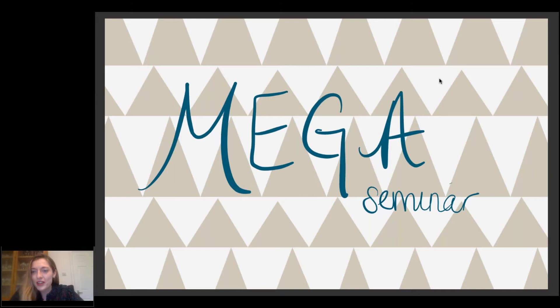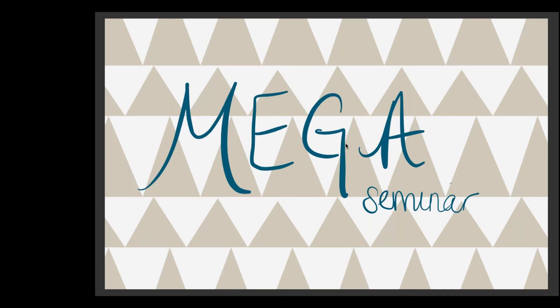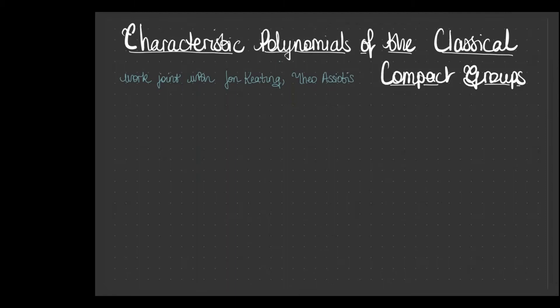Thank you very much. I will say salut now with my face. I might turn off the video to preserve bandwidth. So hi, this is me and now you'll hopefully just hear my voice. As he said, I want to talk today about the characteristic polynomials of the classical compact groups. Everything I'm going to be talking about today is work joint with John Keating and Theo Asiotis, some work we've been conducting over the past two or three years. It's a pleasure to speak to everyone today and Happy New Year as well.